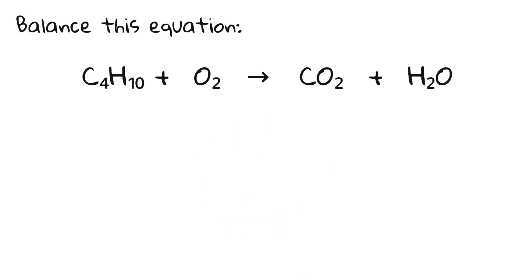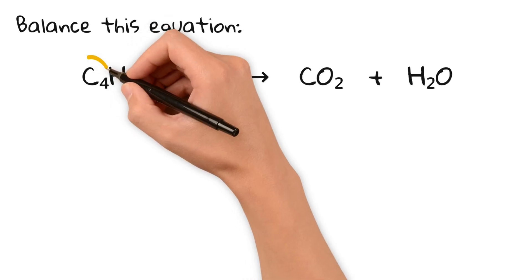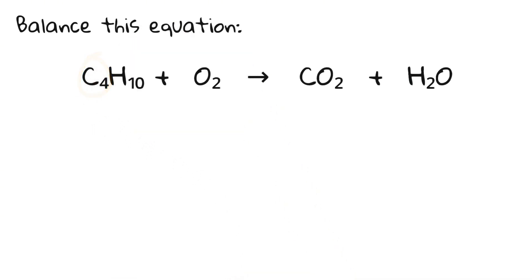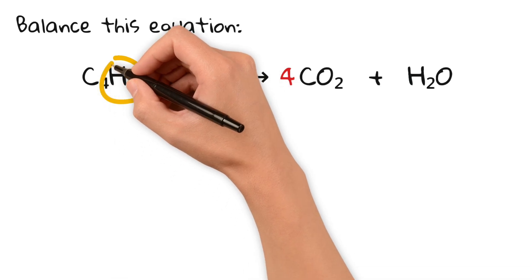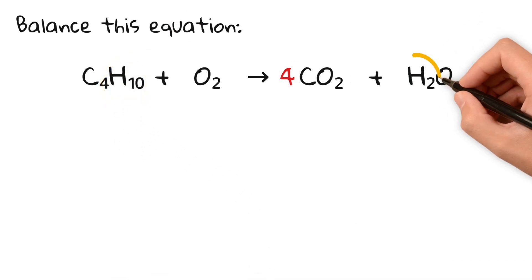Here it makes sense to start with carbon. Notice that there are four carbons on the left hand side and just one on the right hand side. So to balance we need four CO2. Next we can see that there are 10 hydrogens on the left hand side but only two on the right hand side. So we need five H2O.